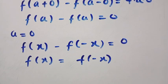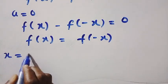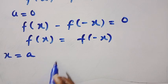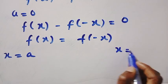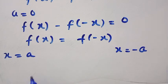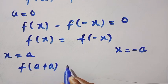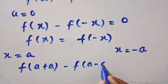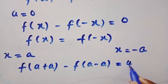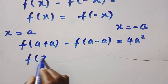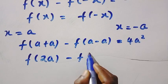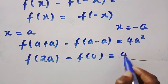Now let x equal a. Anywhere I see x, I replace it with a. We get f of a plus a minus f of a minus a equals 4a squared. This simplifies to f of 2a minus f of 0 equals 4a squared.